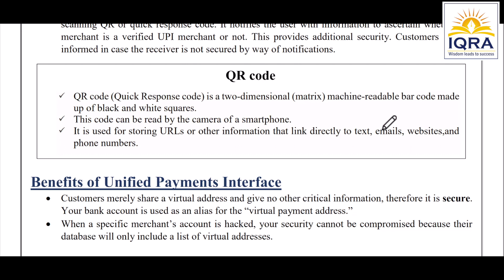QR code stands for Quick Response code, which you scan when making UPI payments. It is a two-dimensional machine-readable barcode made of black and white squares that can be read by any smartphone. URLs, text, email, website links, phone numbers, and other information can be stored in a QR code. UPI payments are one of many usages of QR codes.